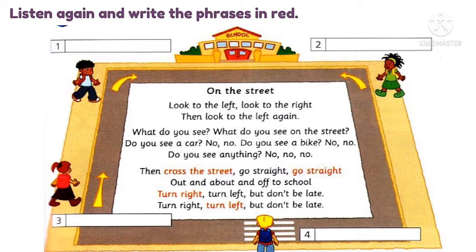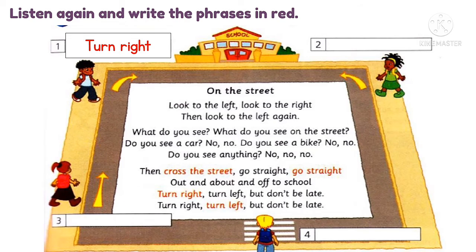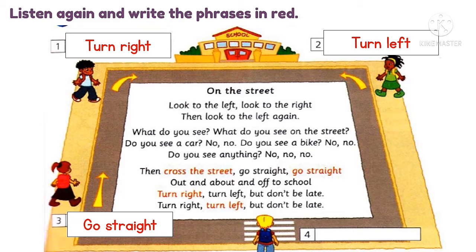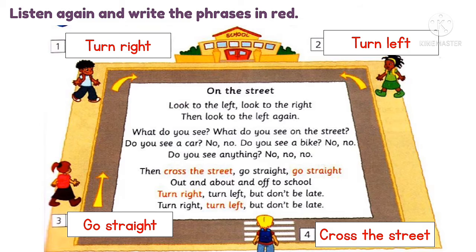Let's check the answers. Number one is turn right. Number two is turn left. Number three is go straight. Number four is cross the street.